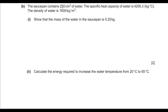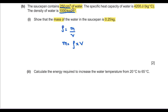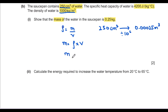Part b: the saucepan contains 250 cm³ of water. The specific heat capacity of water is 4200 J/kg°C and the density of water is 1000 kg/m³. Show that the mass is 0.25 kg. Using mass = density × volume: convert 250 cm³ to 0.00025 m³, then mass = 1000 × 0.00025 = 0.25 kg.